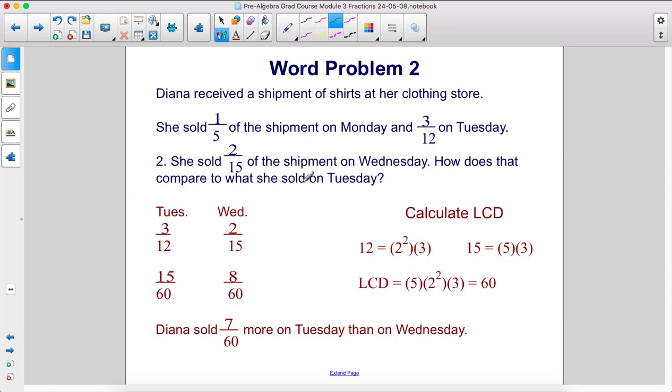For this one, we want to compare 2 fifteenths with 3 twelfths, which means we need them to have the same denominator. Therefore, once again, we calculate the lowest common denominator between 12 and 15. Here, you see that it is also 60.